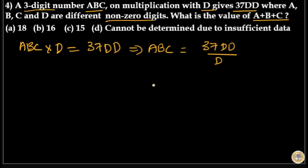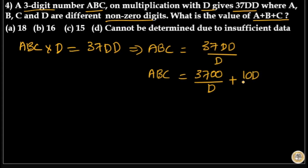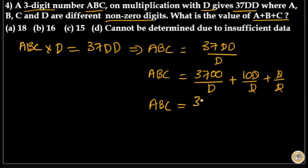To cancel D, I will split 37DD like this: ABC equals 3700 divided by D, plus the tens place 10D divided by D, plus the units place D divided by D. Now you can cancel D from 10D/D and D/D cancels as well. So ABC becomes 3700/D plus 10 plus 1, which is 3700/D plus 11.